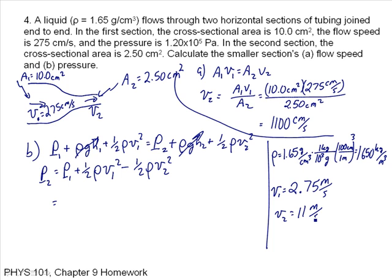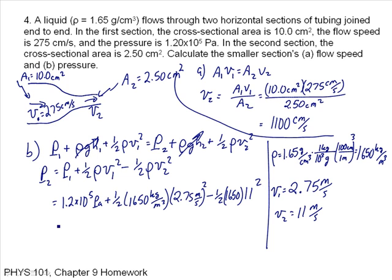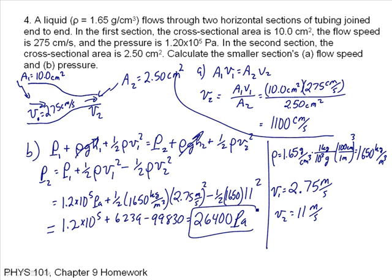So I can put in my values here. P1 is 1.2 times 10 to the fifth Pascals plus 1 half of my density, which is 1650 kilograms per cubic meter, times V1 squared, which is 2.75 meters per second squared minus 1 half of 1650 times 11 squared. And that is equal then, it's 1.2 times 10 to the fifth plus 6239 minus 99830.